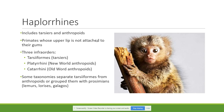The three infra-orders are: the tarsiiformes, which include the tarsiers; the platyrrhines, which include the New World anthropoids; and the catarrhines, which include the Old World anthropoids. Practically, the key difference comes down to that lip attachment — if the upper lip is not attached, we are talking about a haplorhine; if the upper lip is attached, we are talking about a strepsirrhine.